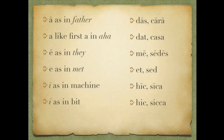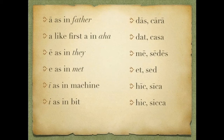Let's go over some of the vowel sounds in Latin. They have long and short vowels as in English, but the pronunciation is a little different. Long A in Latin is like the A in father — so we have the words das and kara. Short A is like the first A in aha — so dot, casa — shorter in duration, a little difference in pronunciation.